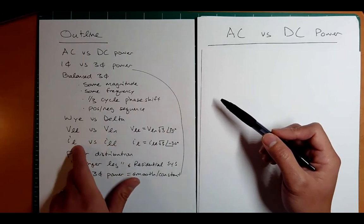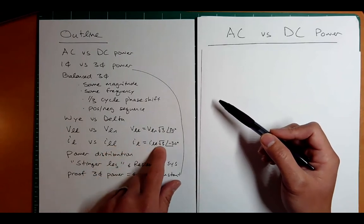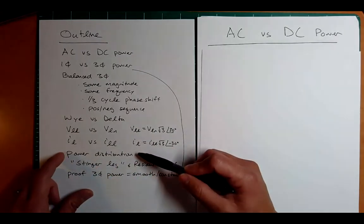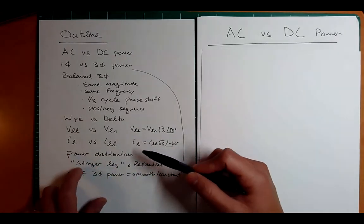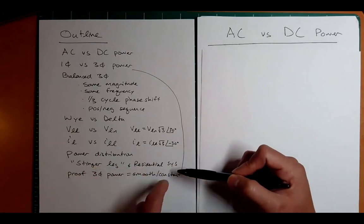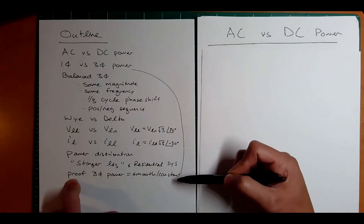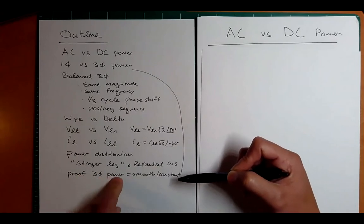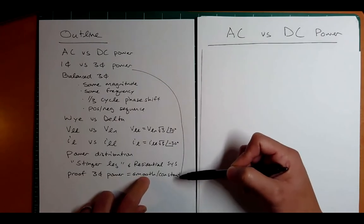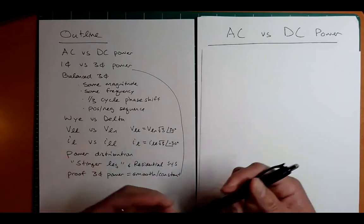For the line currents versus the line-to-line current, we'll see that the line current is actually bigger, but it lags the line-to-line current by 30 degrees. We'll look at a common power distribution map and then look at some specifics like what does the stinger leg mean and a typical residential power panel. The last thing we'll look at is the proof of why three phase power is actually smooth, and we'll look at an Excel document which actually computes everything and shows some consistency with the theory.